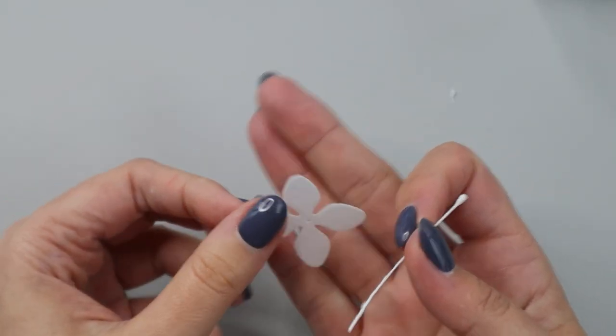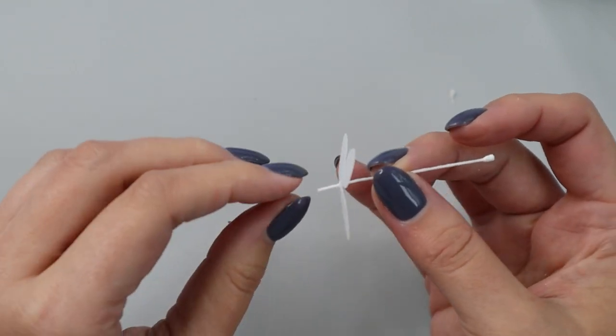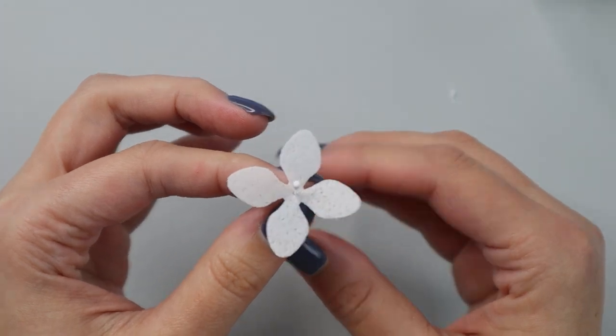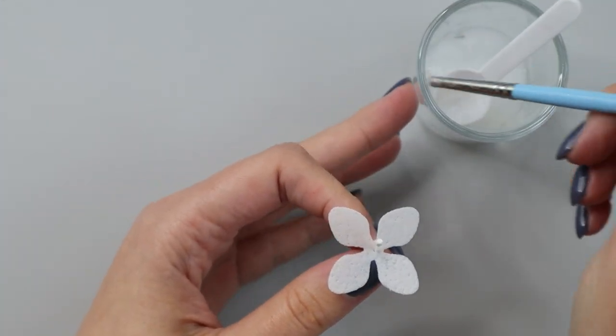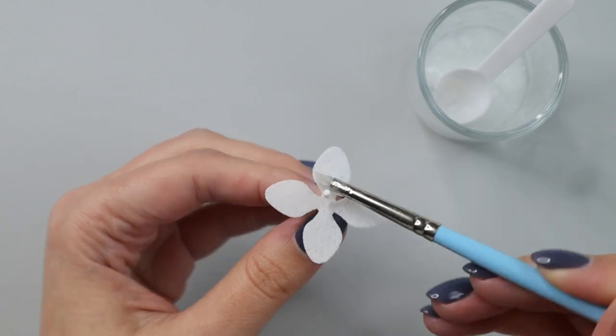Now to assemble my flower, I'm going to take my wafer paper petal, insert this stamen piece, and use a small amount of wafer paper glue here just at the base to soften the wafer paper a little bit so I can stick the stamen to my flower.